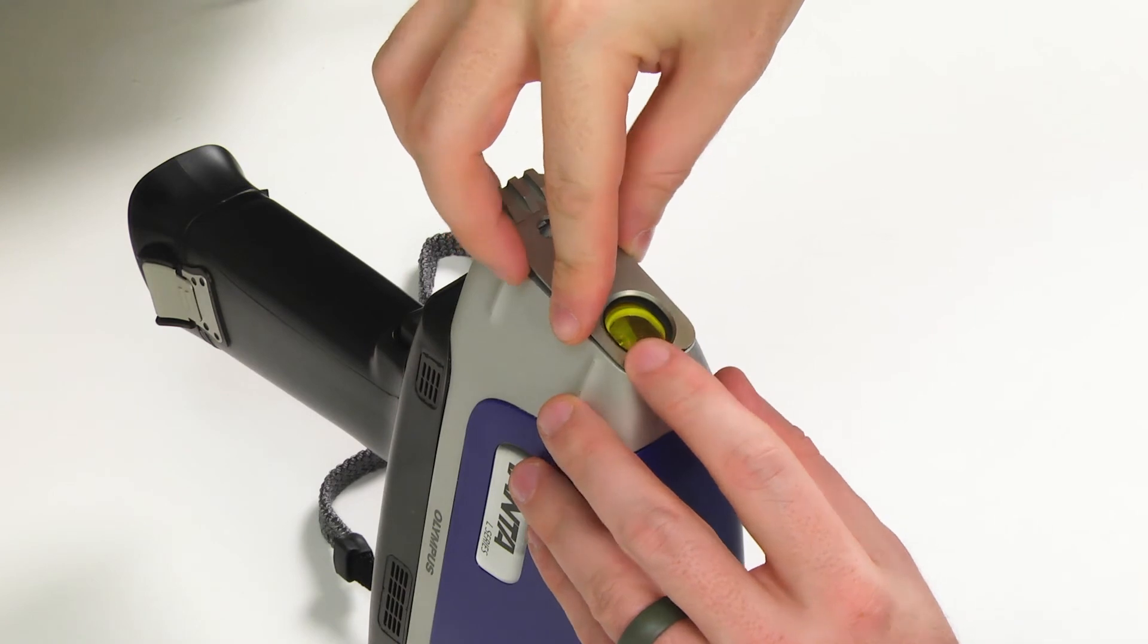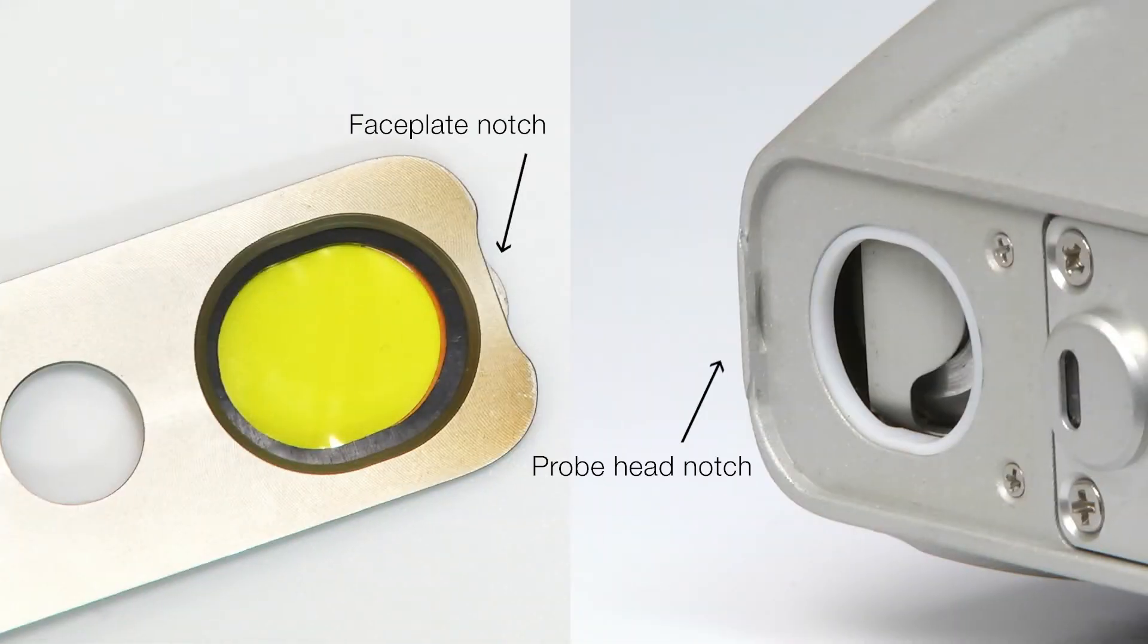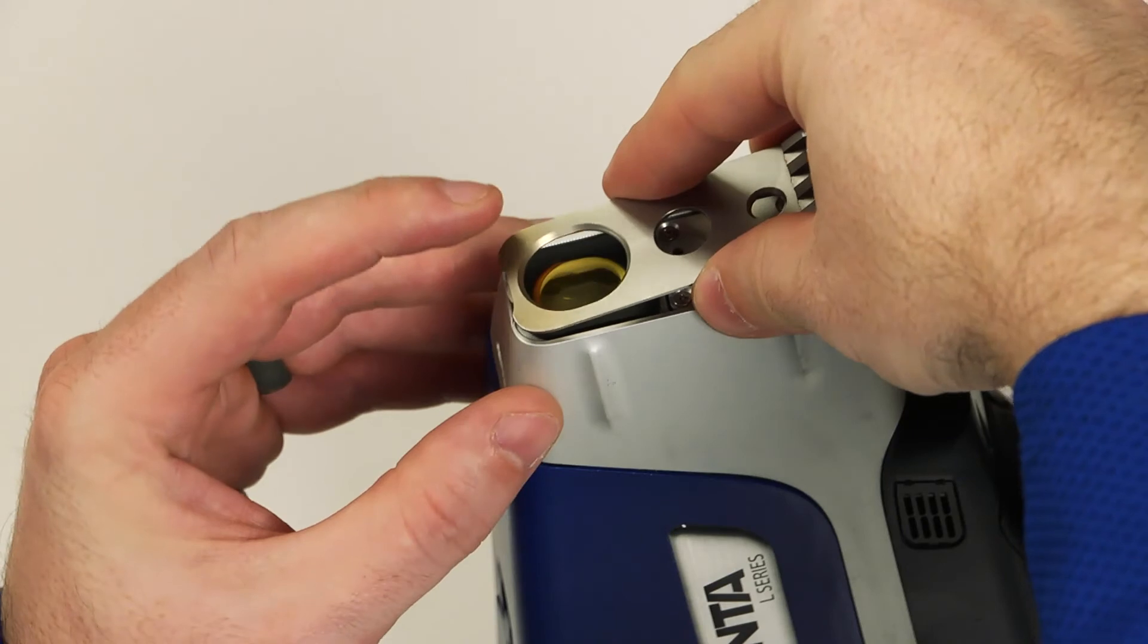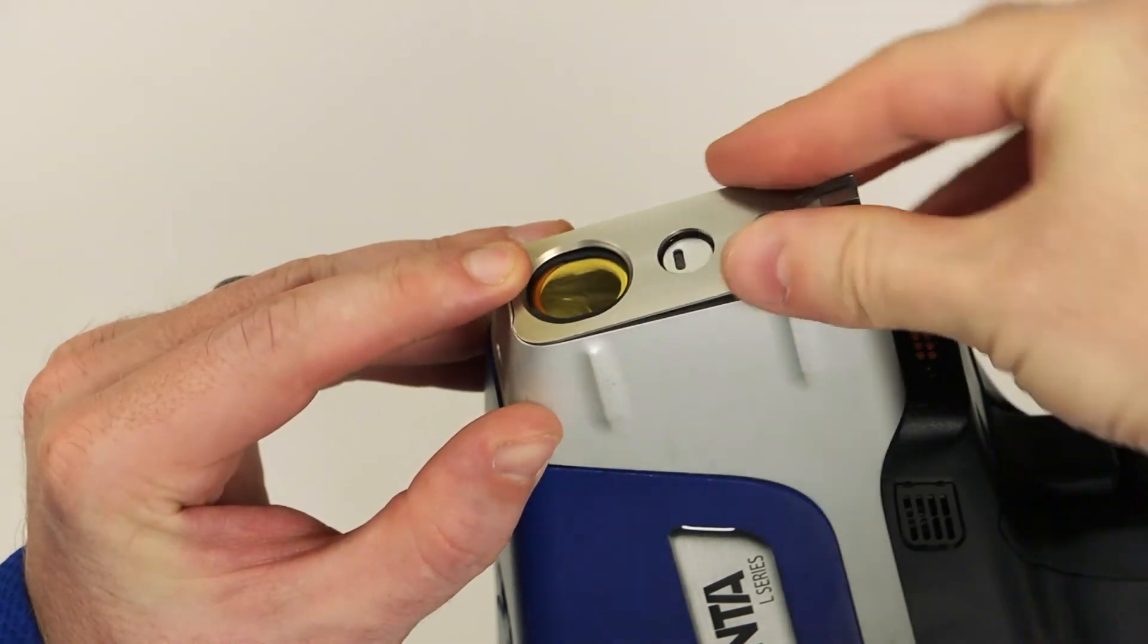Snap the hot heel faceplate into place by sliding the notch at the top of the faceplate into the notch at the top of the probe head. Gently press the bottom until you feel it click into place.